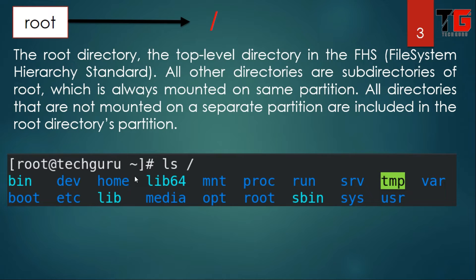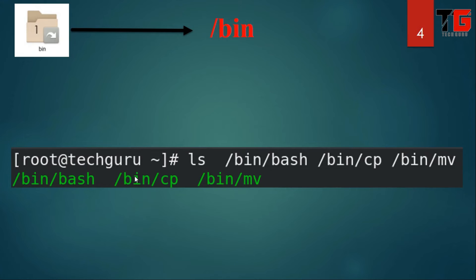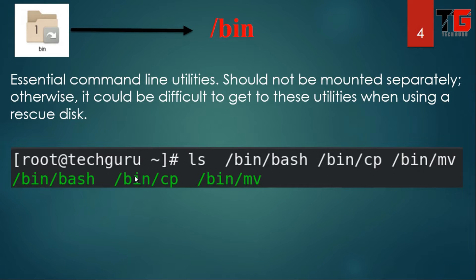The root directory is always mounted on the same partition. If you are creating some partitions like slash home and slash var, the user profile will be moved to the new partition on the hard drive. But if we have not created those partitions like slash home and slash var, they are automatically mounted in the root partition. Next is slash bin: essential command line utilities.